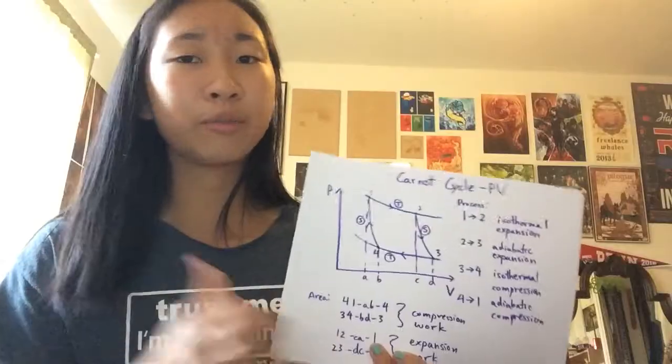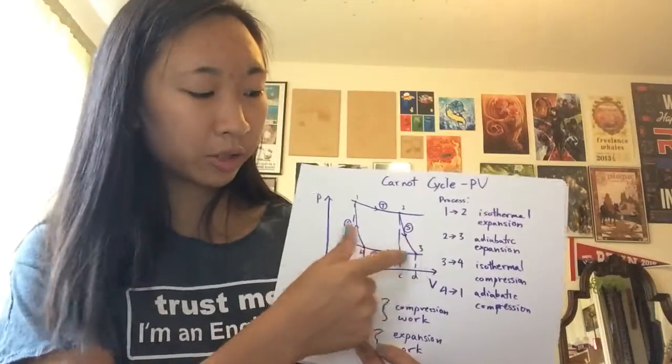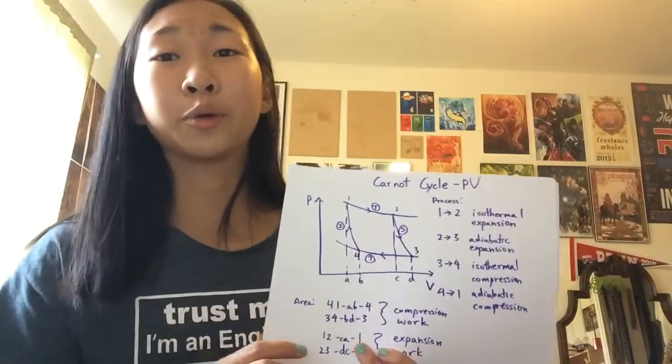Three to four, going backwards on the graph means you're compressing, and being on a constant temperature line means it's isothermal. So you have an isothermal compression.